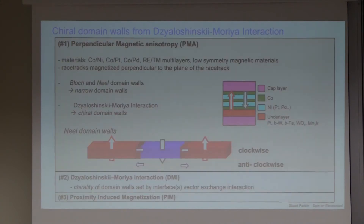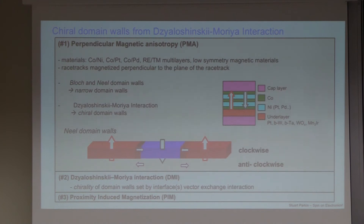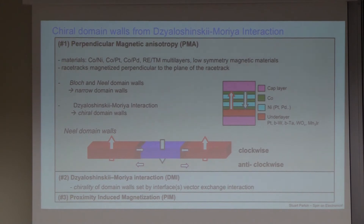There are basically four spin-orbit derived phenomena that are important. One is perpendicular magnetic anisotropy. The Phillips research group theoretically predicted 25 years ago that alternating layers of nickel and cobalt — where interfaces lead to broken symmetry — cause the magnetization to go perpendicular. This is true for many magnetic multilayers, but the most interesting case is cobalt and nickel. This is the first effect derived from broken symmetry and spin-orbit coupling.